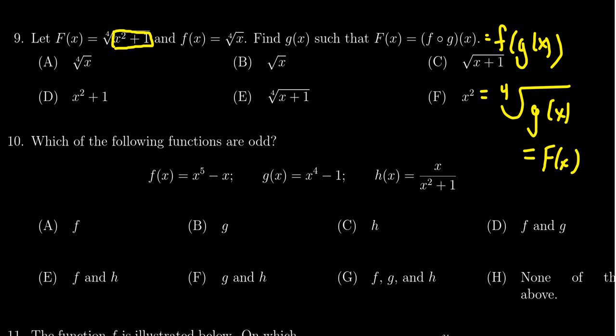It's got to be x squared plus 1. So we see g of x is in fact equal to choice D.